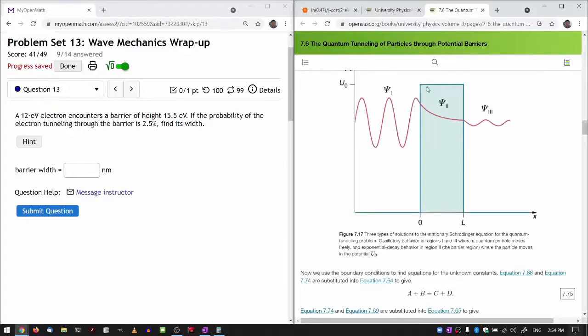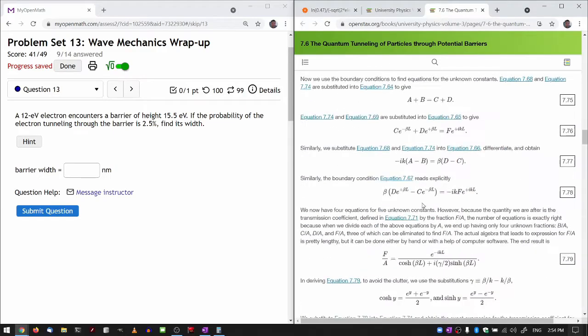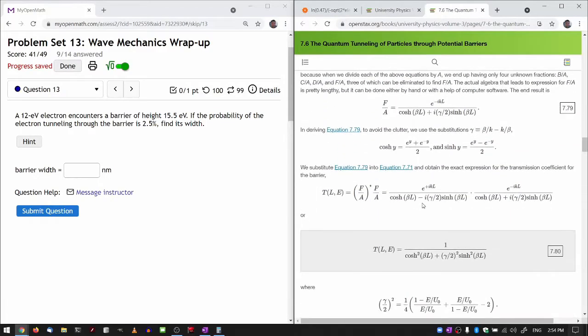Including both of these terms changes the tunneling probability. So tunneling probability is not a monotonic function that decreases as a function of the thickness. At certain thicknesses, there can be a resonant amplification of the tunneling probability.